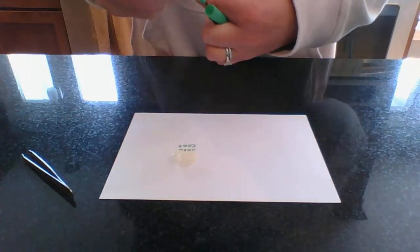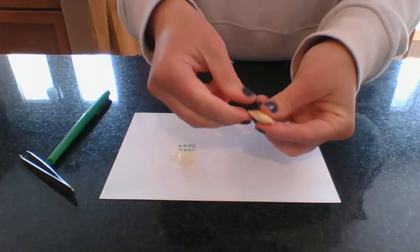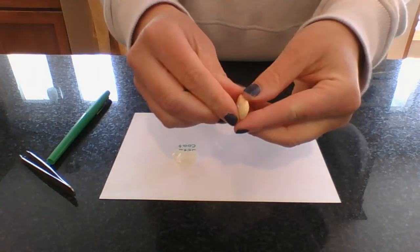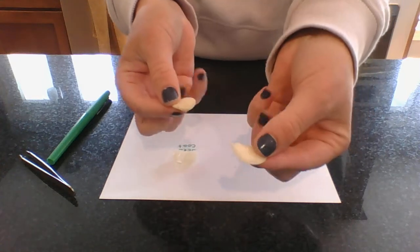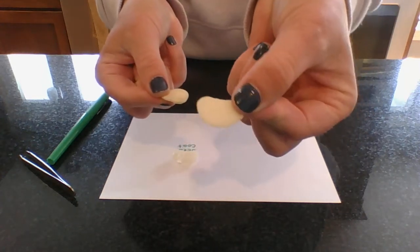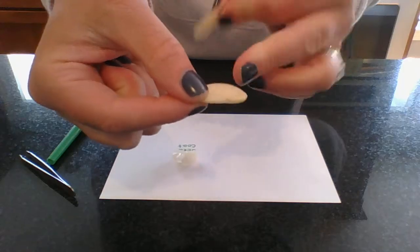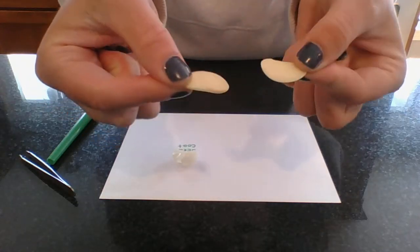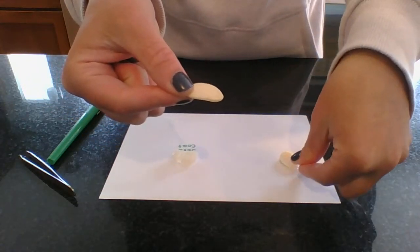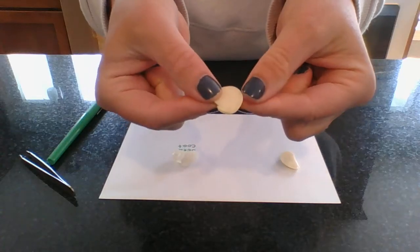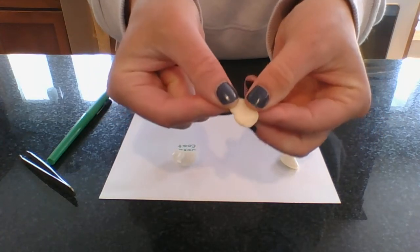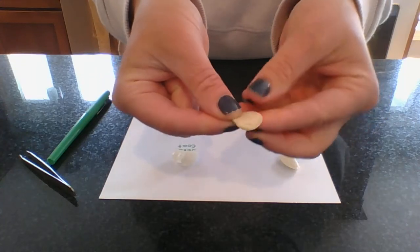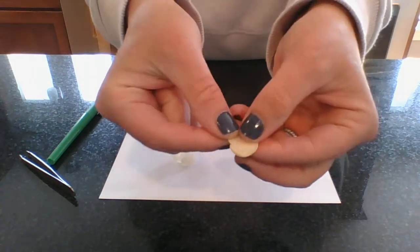Then you open up this part right here. It usually comes right apart. This right here and all around here is the food. It's the seed's food store so that it can grow and get nutrients while it's still in seed form. And right when you plant it, it has some nutrients to grow off of.